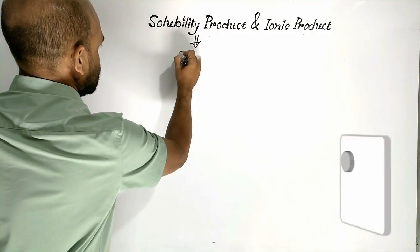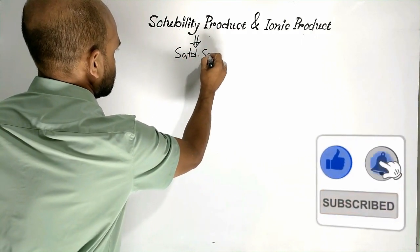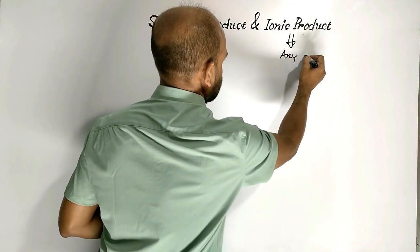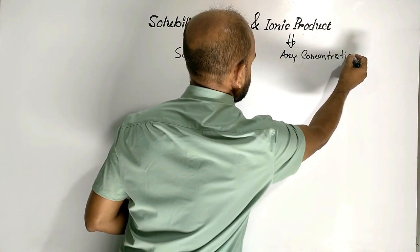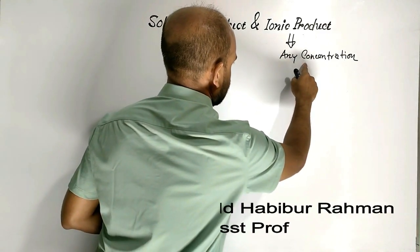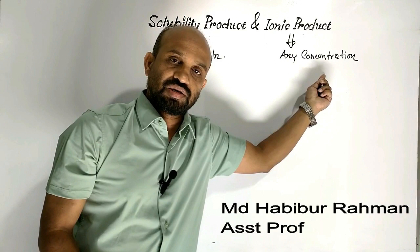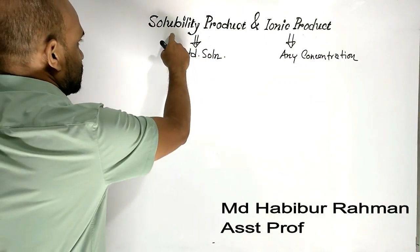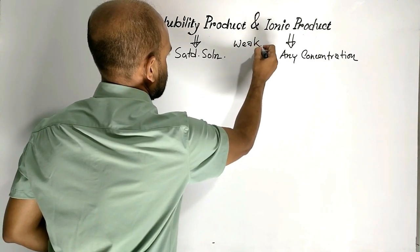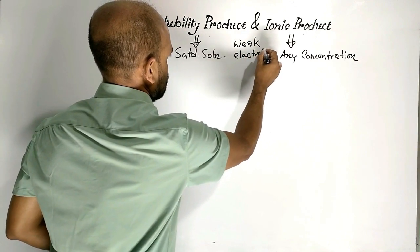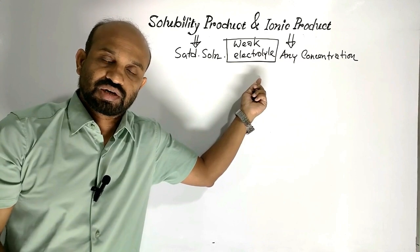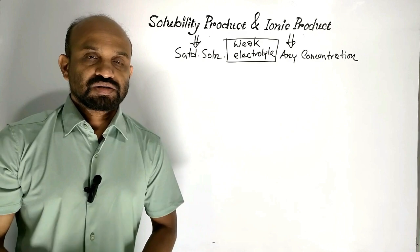Solubility product is related to saturated solution, but ionic product is related to any concentration. A saturated solution is a must for solubility product, but for ionic product any concentration is enough. One common thing for both: they are applicable for weak electrolytes, not strong electrolytes.